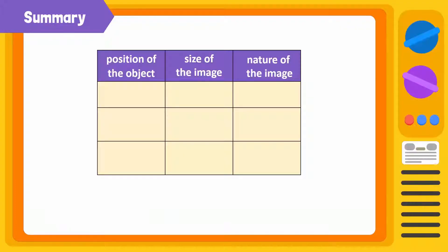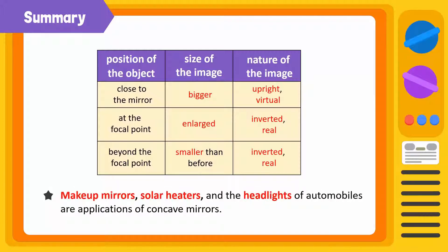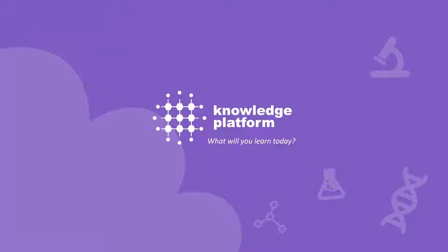Let's summarize. The image formed by a concave mirror is enlarged, virtual, and upright when the object is placed close to the mirror. The size of the image is overly enlarged at the focal point and gets smaller as the object moves away from the focal point. The image is real and inverted when it is placed at or away from the focal point. Makeup mirrors, solar heaters, and the headlights of automobiles are some common uses of concave mirrors.